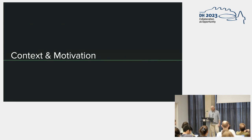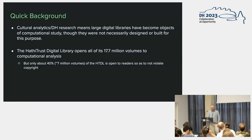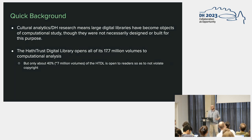We'll start off with some context and motivation. We're looking at leveraging machine learning to find items of English language fiction in a large digital library. Culture analytics and DH research has kind of exploded, especially in the last 10 years, and this means that large digital libraries have now become objects of computational study, even though they were not designed or built for this purpose.